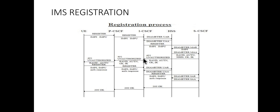The 401 Unauthorized message reaches the P-CSCF. The P-CSCF saves the ciphering key (CK) and integrity key (IK), and forwards the remaining information — the random number (RAND) and authentication token (AUTN) — to the UE.